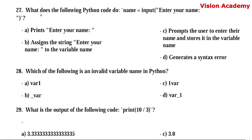Question number 27. What does the following Python code do: name = input("Enter your name")? Option A: prints 'enter your name'. Option B: assigns the string 'enter your name' to the variable name. Option C: prompts the user to enter their name and stores it in the variable name. Option D: generates a syntax error. Here, option C is the right answer.